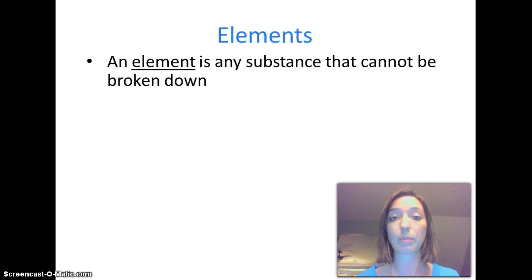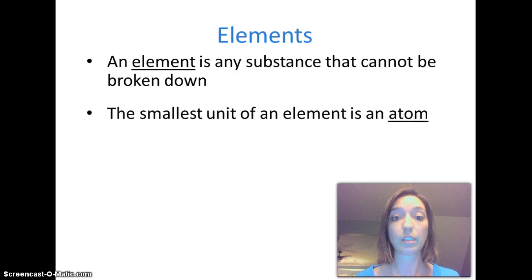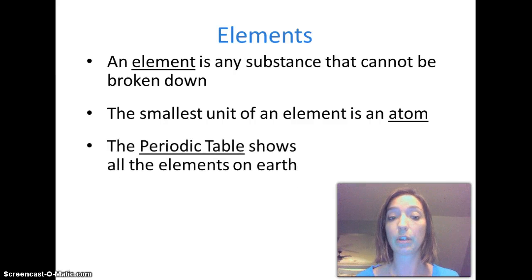So the first thing we're going to talk about is elements, and an element is something that cannot be broken down. It's the smallest thing you can have. The smallest unit of an element is an atom, and the periodic table shows us all the elements on Earth.